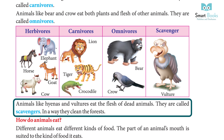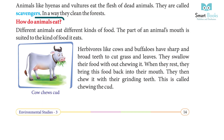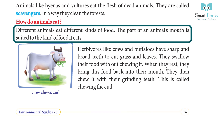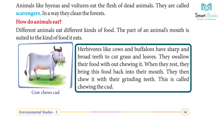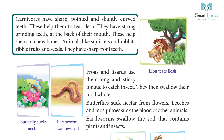Different animals eat different kinds of food. The part of an animal's mouth is suited to the kind of food it eats. Herbivores like cows and buffaloes have sharp and broad teeth to cut grass and leaves. They swallow their food without chewing it. When they rest, they bring the food back into their mouth and chew it with their grinding teeth — this is called chewing the cud. Carnivores have sharp, pointed, and slightly curved teeth to tear off flesh.